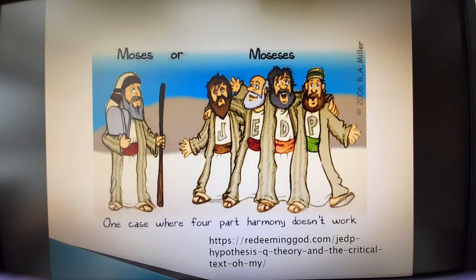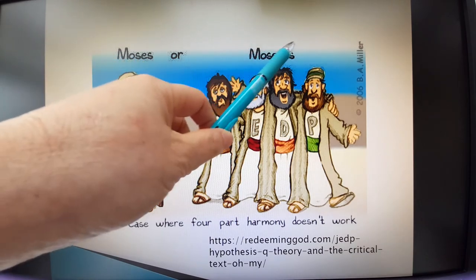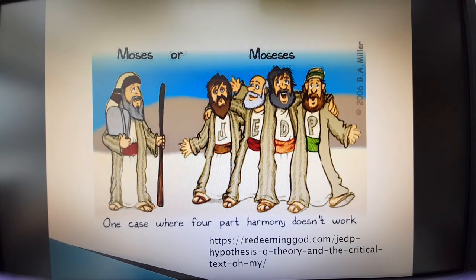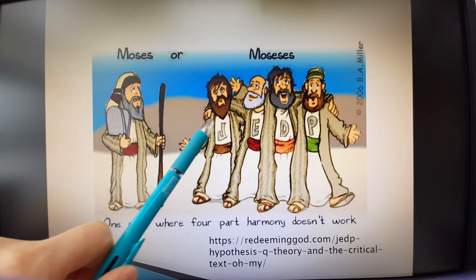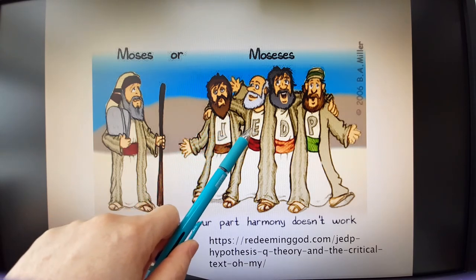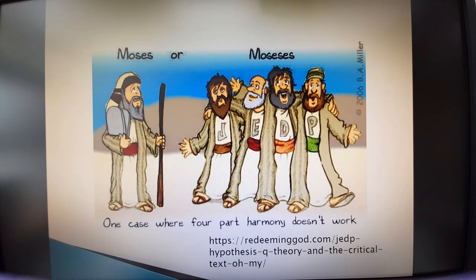A picture summarizes what JEDP tells you — whether there is one Moses or four Moseses. JEDP means not Moses wrote the Pentateuch, but the Pentateuch came from those four sources.